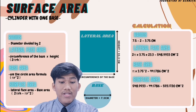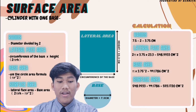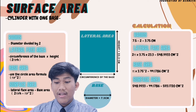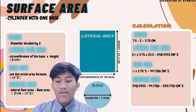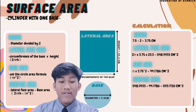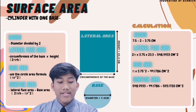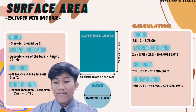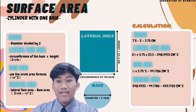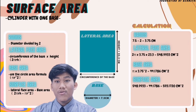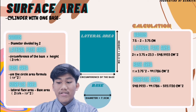For the base area, we use the circle area formula πr². The calculation is π × (3.75)² = 44.1786 cm². For the total surface area, we add the lateral face area and base area: 548.9933 + 44.1786 = 593.1720 cm².